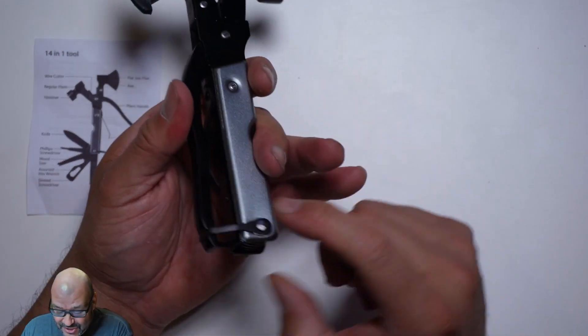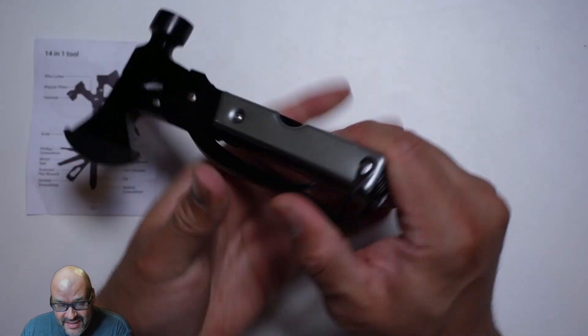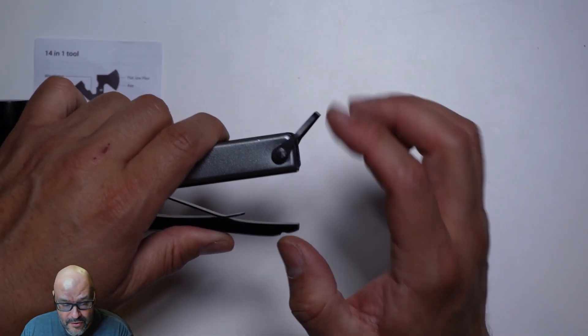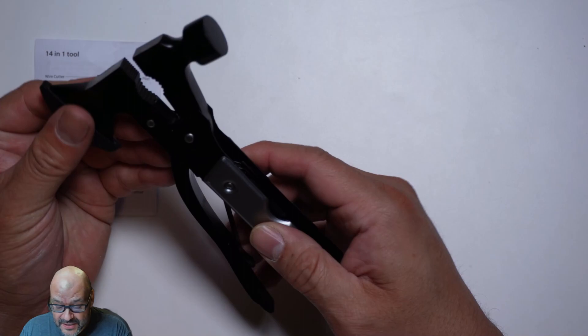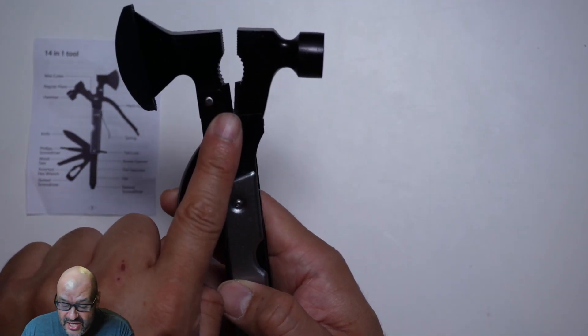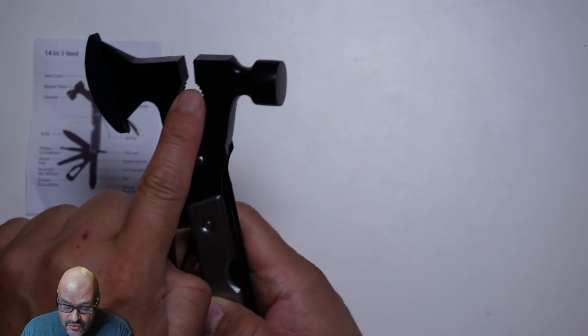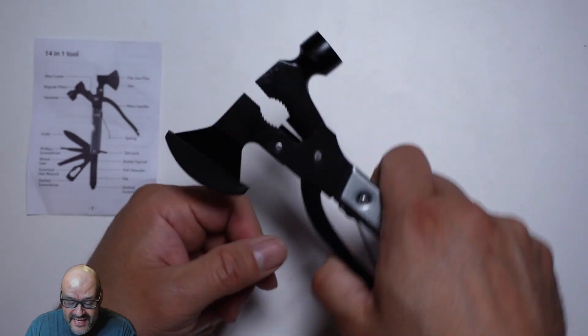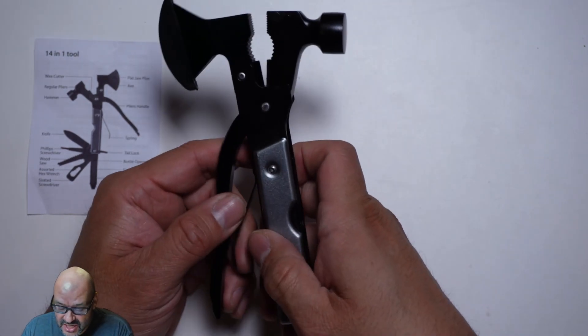And then what you do is you actually press down here and it opens up for some more. Now the great feature about it, there's some actual cutters in there that you can actually do wire cutting. You could crush things. You could grab a bolt and actually twist it like a wrench, pretty much.